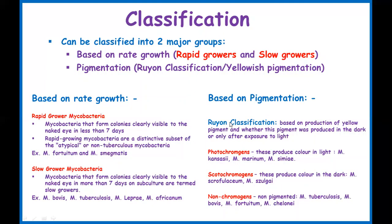The older Runyon classification is based on the yellow pigmentation produced by Mycobacterium under different conditions. Those that produce yellow pigment in the presence of light are called photochromogens — for example, Mycobacterium kansasii. Those that produce pigmentation only in darkness are called scotochromogens — for example, Mycobacterium gordonae. Those that do not produce pigment regardless of light or darkness are called non-chromogens — and Mycobacterium tuberculosis belongs to this group.